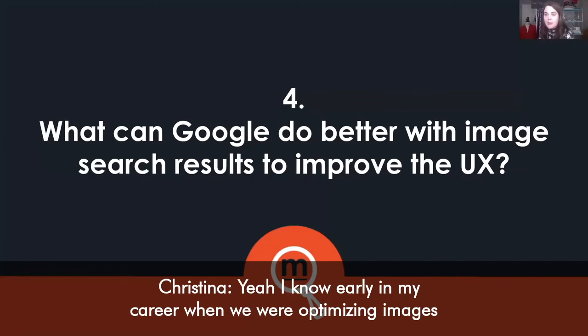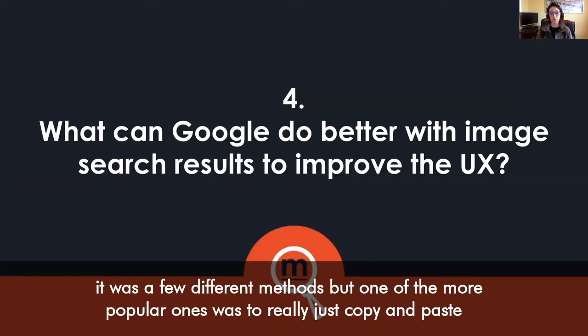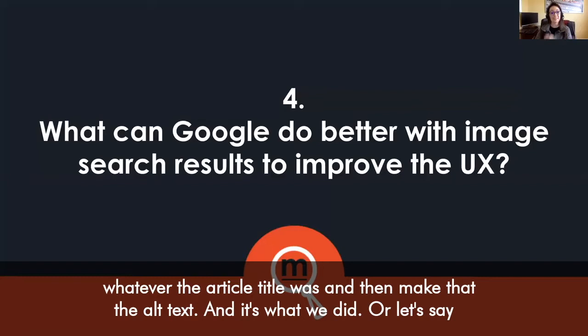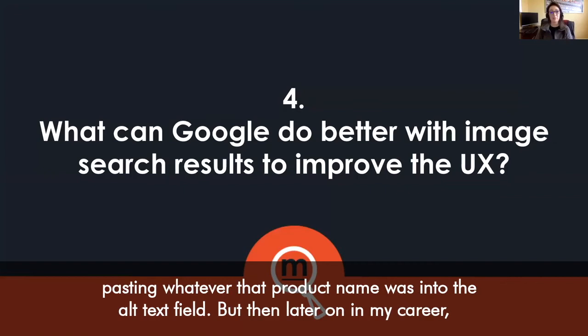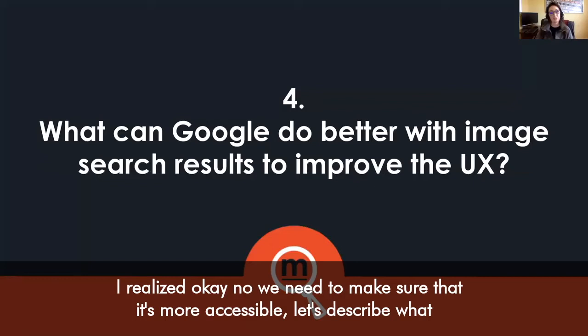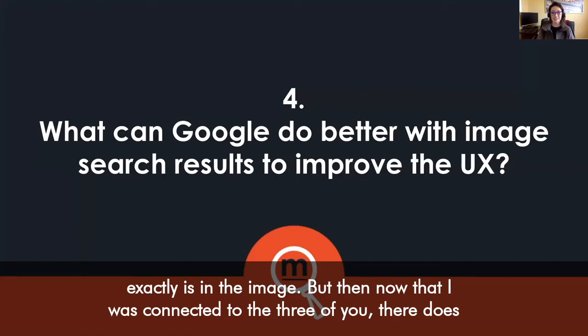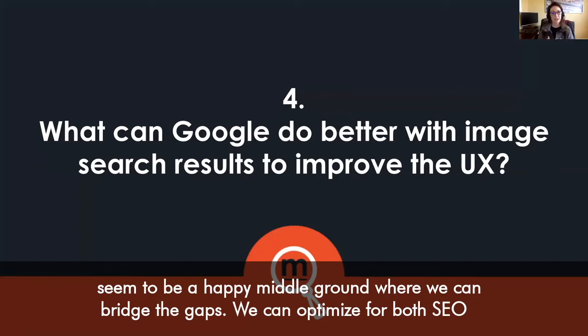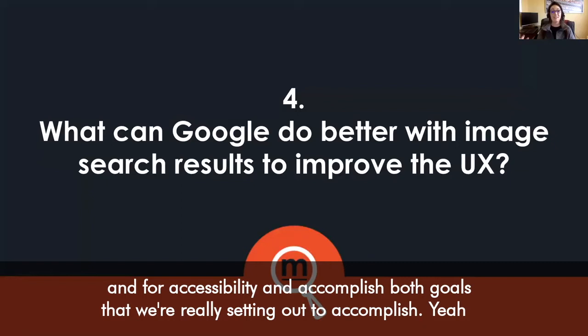Early in my career when we were optimizing images, one of the more popular methods was to just copy and paste the article title and make that the alt text, or for e-commerce websites, copy the product name into the alt text field. Later I realized we need to make it more accessible and actually describe what's in the image. But now, connected to all three of you, there does seem to be a happy middle ground where we can bridge the gaps and optimize for both SEO and accessibility.